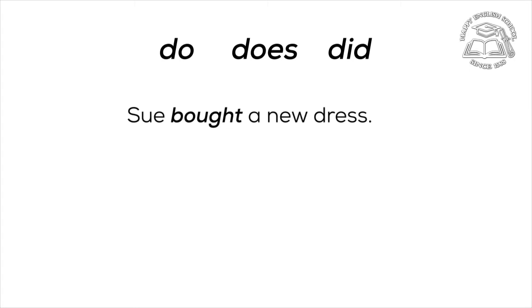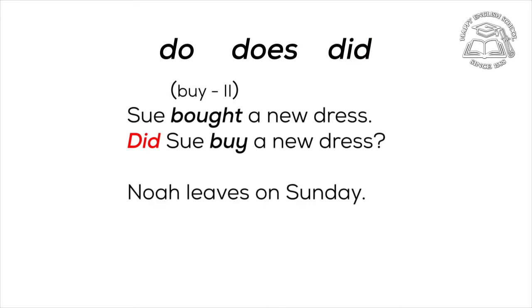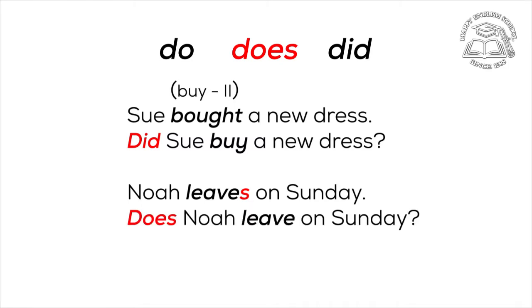Let's do it again. 'Sue bought a new dress.' 'Bought' is the second form of 'buy'. That means we should take the second form of 'do' — 'did'. 'Did Sue buy a new dress?' 'Noah lives on Sunday.' 'Lives' is the first form of 'live' plus ending -s. That means we should take 'do' plus -es — 'does'. And don't forget to leave the main verb with no endings. 'Does Noah live on Sunday?'